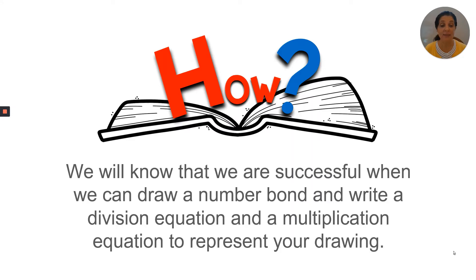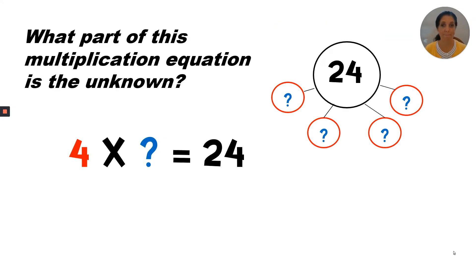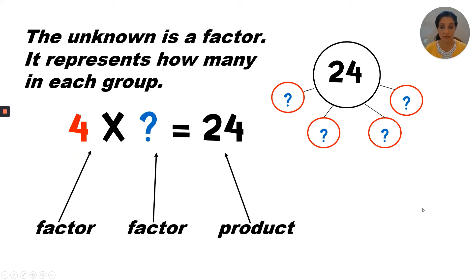Remember that in multiplication we have a factor times a factor equals a product. What part of this multiplication equation is the unknown? We know that the first factor is the number of groups — and we have one, two, three, four circles. The second factor is the size of the group, or how many in each row. The last number is the product, which is the total amount.